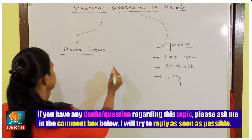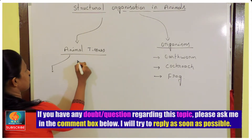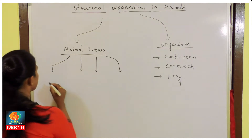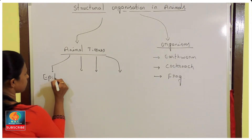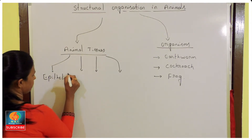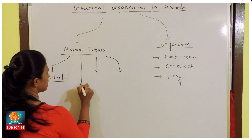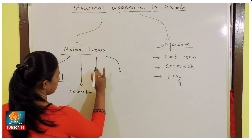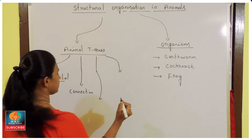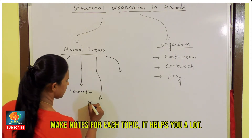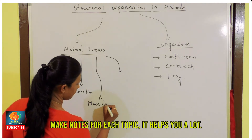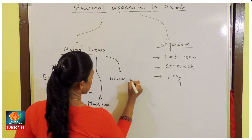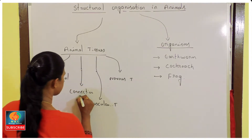In animal tissues, there are four types of tissues. One is epithelial tissue, second one is connective tissue, third category is muscular tissue, and the last one is nervous tissue.